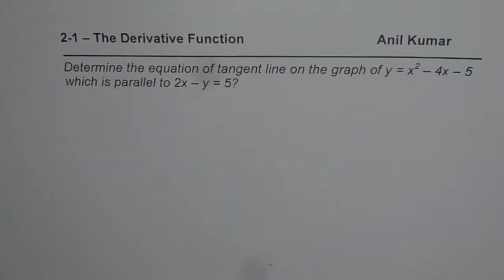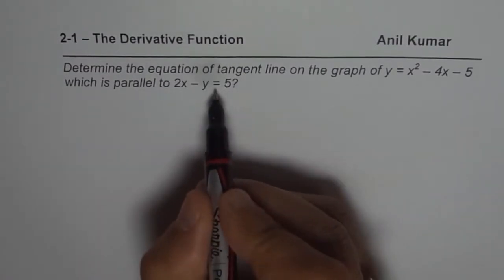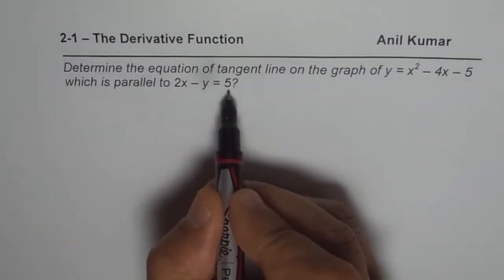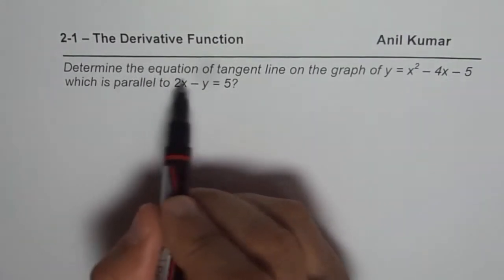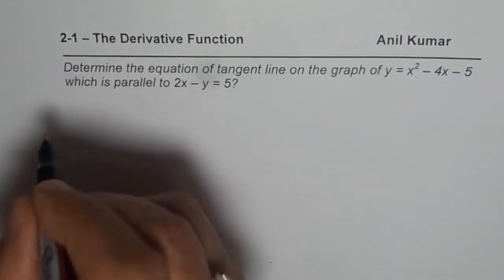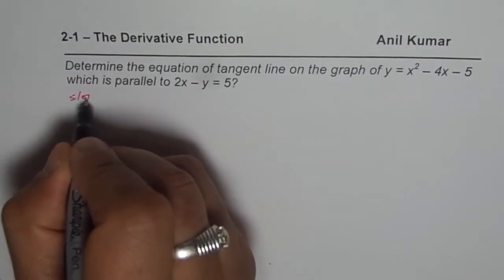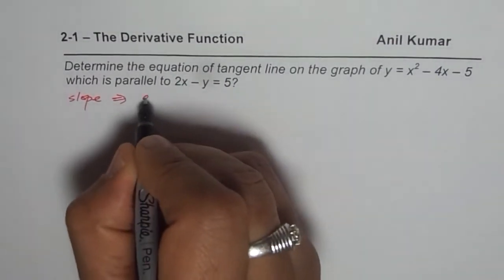The question here is: determine the equation of tangent line to the graph of y = x² - 4x - 5, which is parallel to 2x - y = 5. That is the equation. When we say determine the equation of tangent line, we need to find slope. In our case, slope is the derivative.